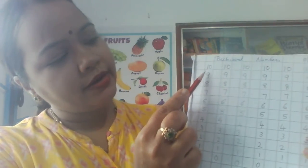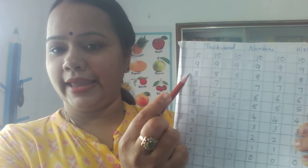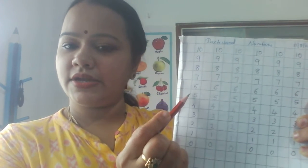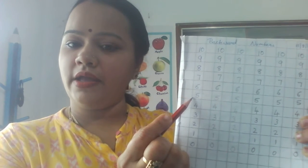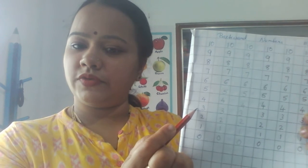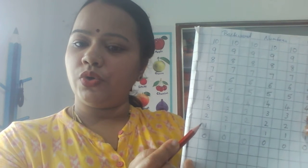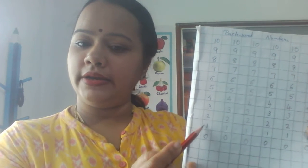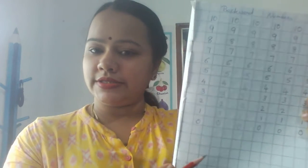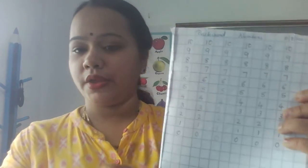10, 9, 8, 7, 6, 5, 4, 3, 2, 1, 0. These are all backward numbers from 10 to 0.